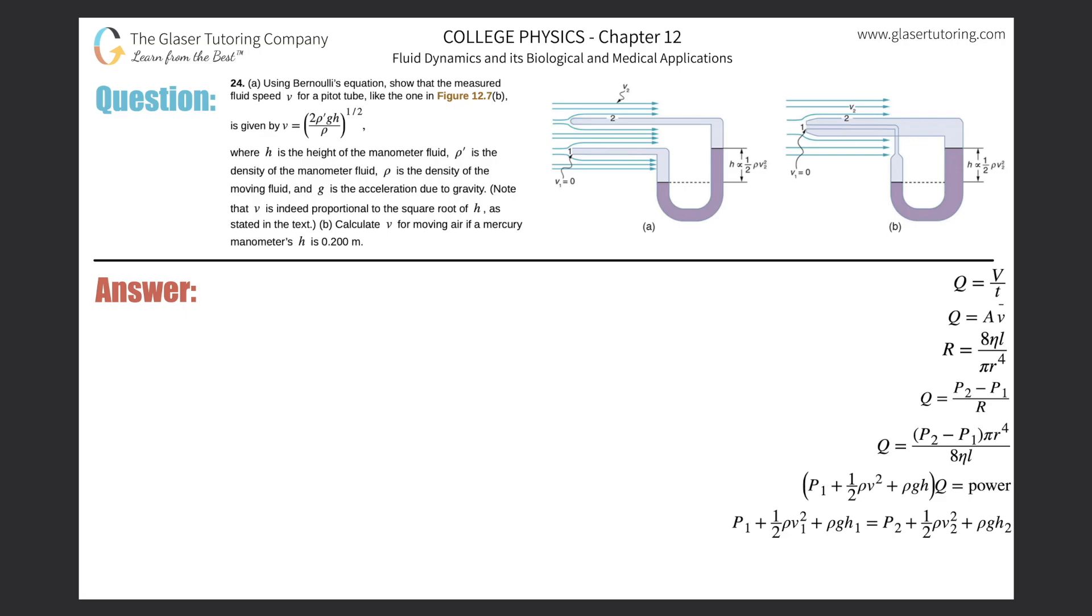Number 24, letter A. Using Bernoulli's equation, show that the measured fluid speed V for a Pitot tube, like the one in figure 12.7b, is given by the formula, where H is the height of the manometer fluid.